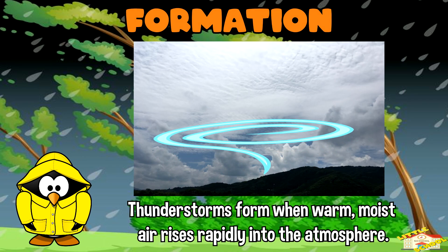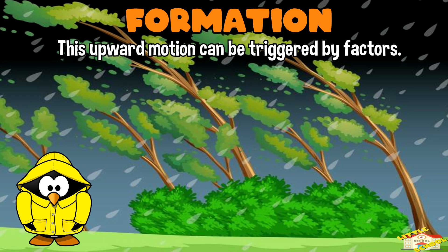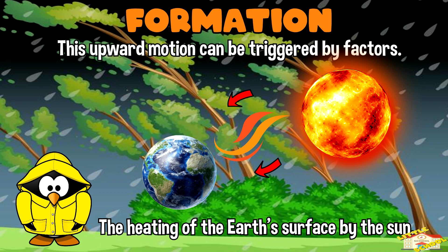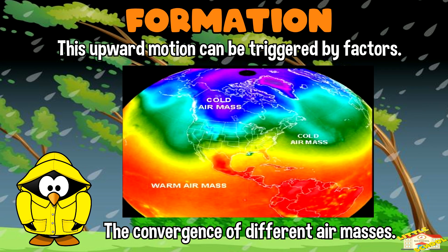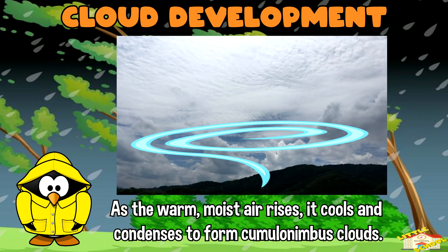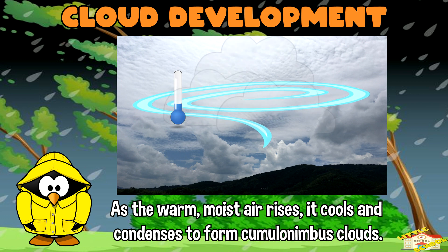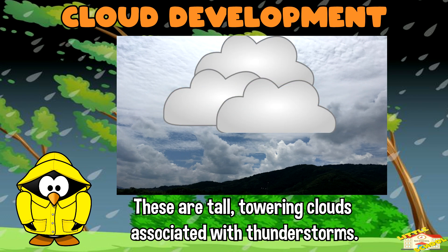Thunderstorms form when warm, moist air rises rapidly into the atmosphere. This upward motion can be triggered by factors such as the heating of the earth's surface by the sun, or the convergence of different air masses. As the warm, moist air rises, it cools and condenses to form cumulonimbus clouds — tall, towering clouds associated with thunderstorms.